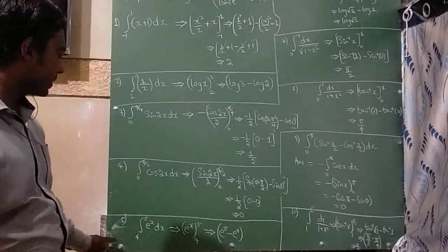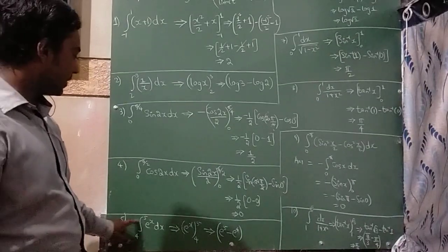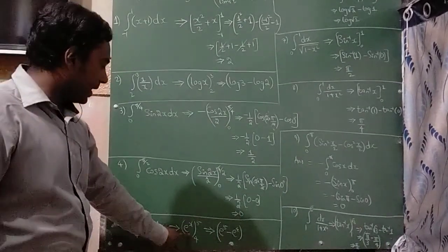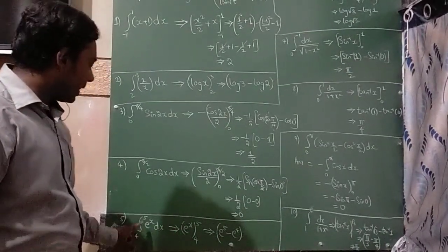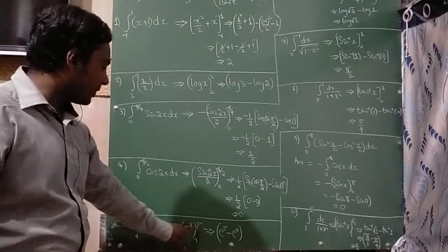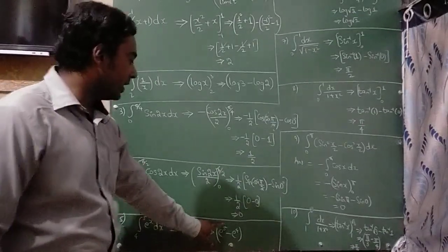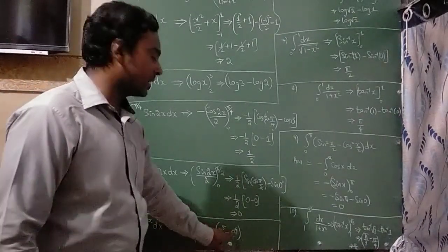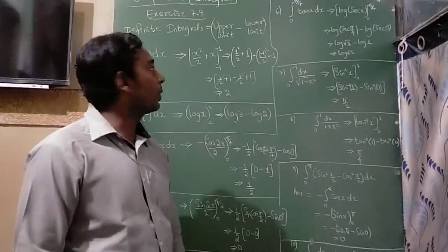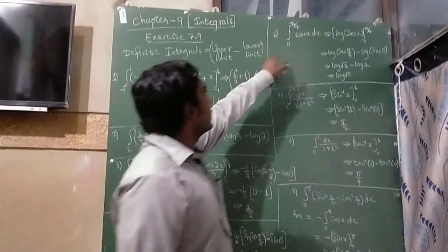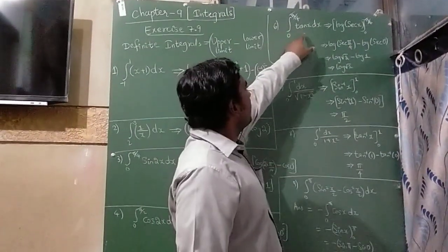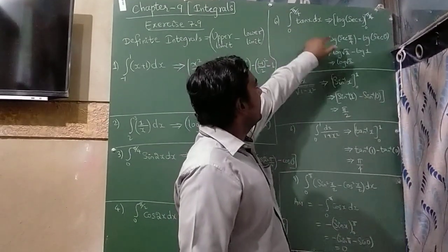The fifth question is integration of eˣ dx. The integral of eˣ is eˣ itself, with upper limit 5 and lower limit 4. So the answer is e⁵ minus e⁴.